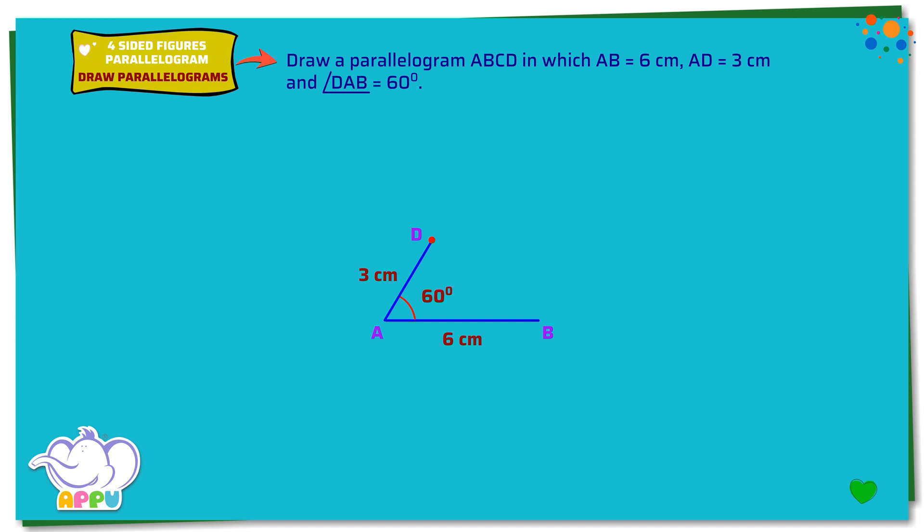Step 2. Draw a line parallel to AD at B. Mark C on the line such that BC equals 3 cm.